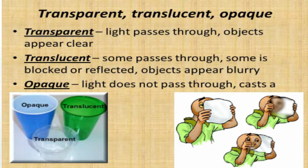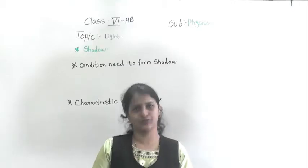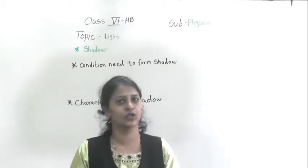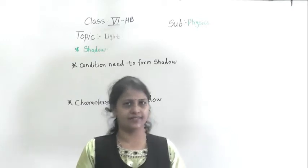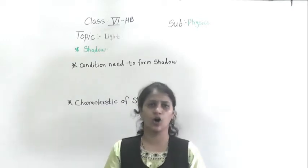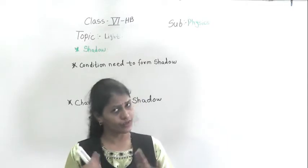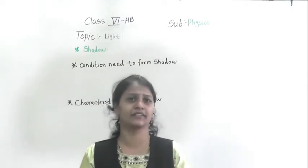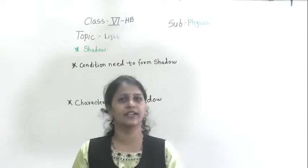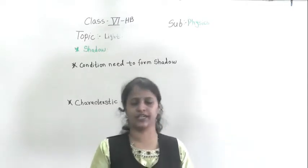We discussed opaque objects. Opaque means the material through which light does not pass — that is called an opaque object. It does not allow light to pass through it. For example, a chair or a human being — these come under opaque objects.